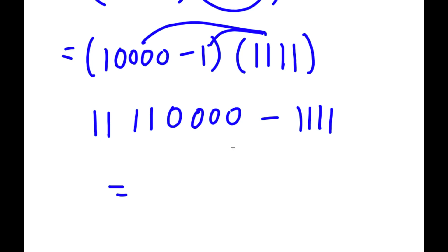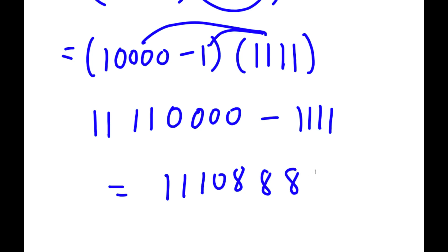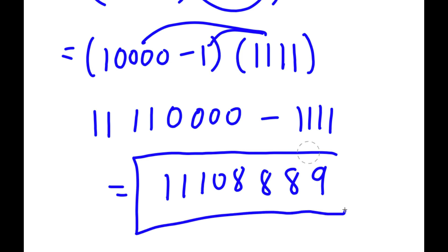So 11,110,000 minus 1111 equals 11,108,889. This is the answer to the problem.